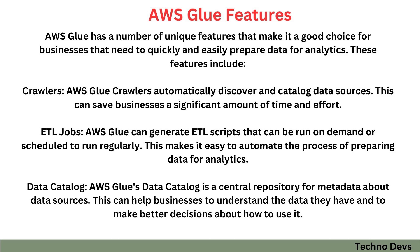Now let's discuss some unique features of each service. AWS Glue has a number of unique features that make it a good choice for businesses that need to quickly and easily prepare data for analytics. These features include: Crawlers — AWS Glue Crawlers automatically discover and catalog data sources, saving businesses a significant amount of time and effort. ETL Jobs — AWS Glue can generate ETL scripts that can be run on demand or scheduled to run regularly, making it easy to automate data preparation. Data Catalog — AWS Glue's Data Catalog is a central repository for metadata about data sources, helping businesses understand their data and make better decisions about how to use it.